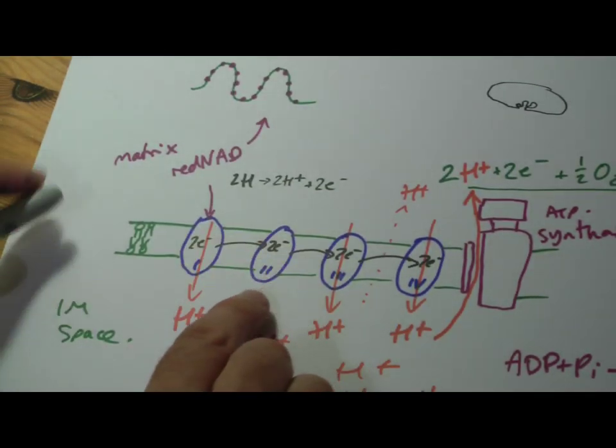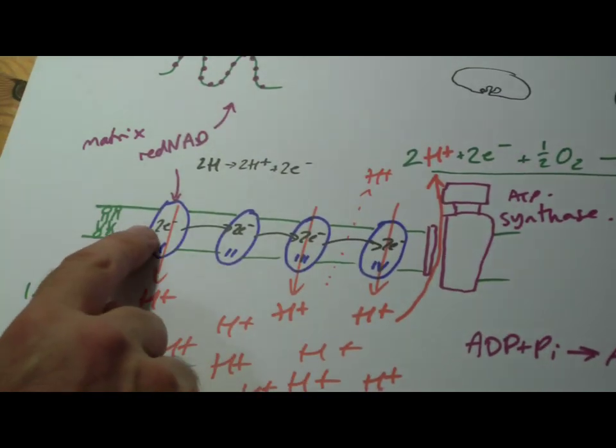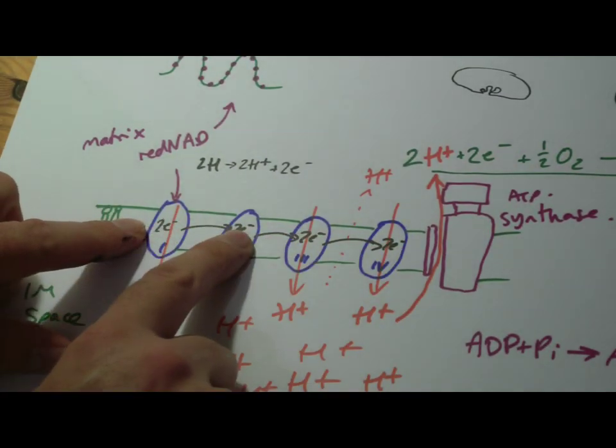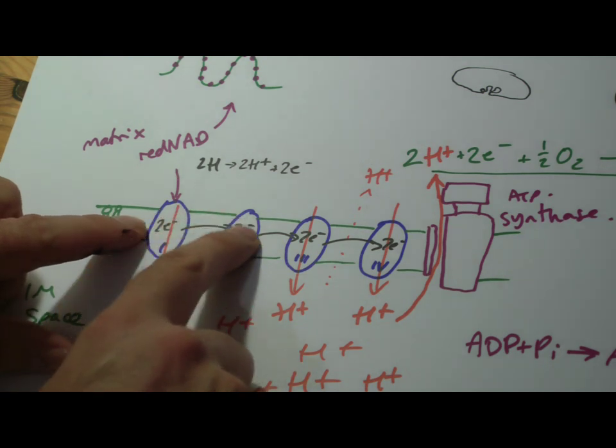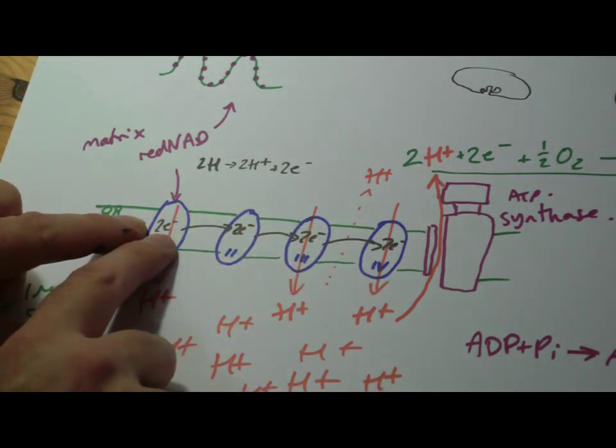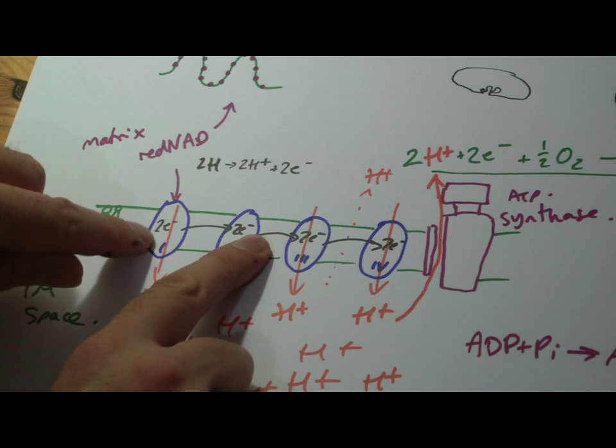And this comes back to the first video I showed you. Remember these electrons, as they're getting passed along, if you gain electrons, you've been reduced. Reduction is gain, reduction is gain, reduction again. But as you pass them on, that's now lost electrons, so it's become oxidized.